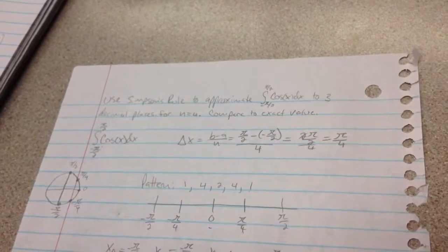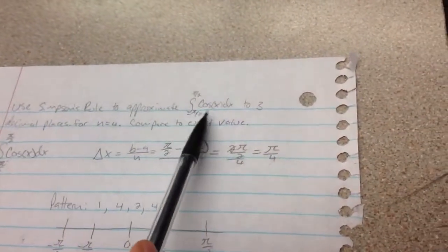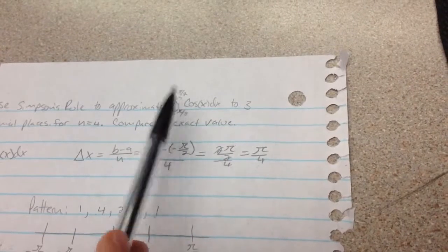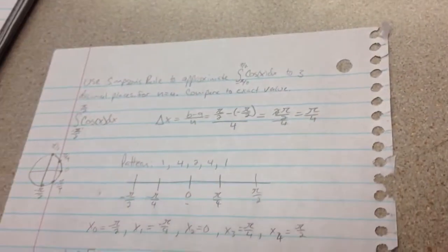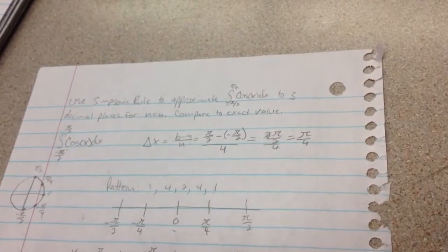Okay, so we are going to use Simpson's rule to approximate the integral of cosine x dx from negative pi over 2 to pi over 2 to 3 decimal places for n is equal to 4. And then we're going to compare it to the exact value.